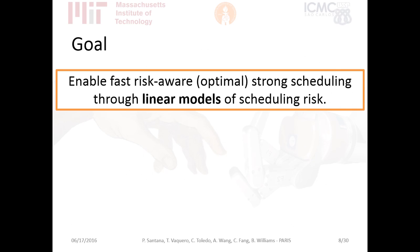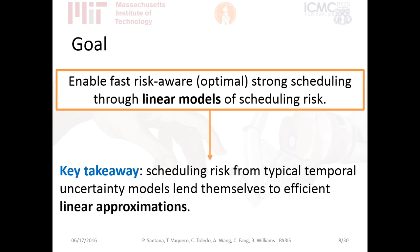The key message: whenever in your research you consider probabilistic models for durations and care about risk, before you go for the nonlinear optimizer of your choice, carefully think about using linear approximations for those risks, because they are actually effective — which is exactly what I'm trying to show today. For example, using the state of the art for existing strong schedule for PSCNs takes about seven minutes to compute. Using PARIS it takes 14 milliseconds, and it actually generates schedules of the same quality.